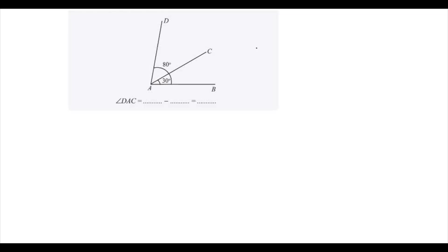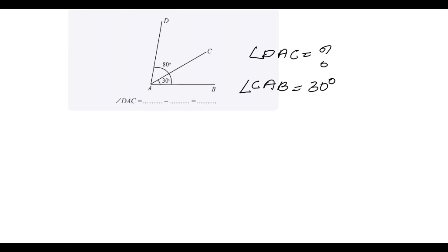This next question is similar to the previous one. Here there are also three angles. We need to find angle DAC. Another angle is angle CAB, which is given as 30 degrees. And we know angle DAB, that is 80 degrees.